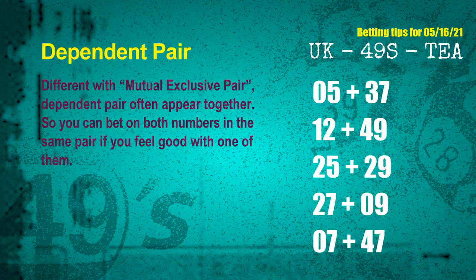Some numbers are mutual exclusive, some are dependent. Numbers in the same dependent pair you can bet on both, because they are often drawn in one draw. The dependent pairs for next draw are: first pair 05 and 37, second pair 12 and 49, third pair 25 and 29, fourth pair 27 and 09, fifth pair 07 and 47.